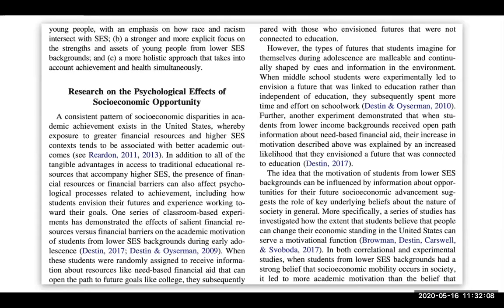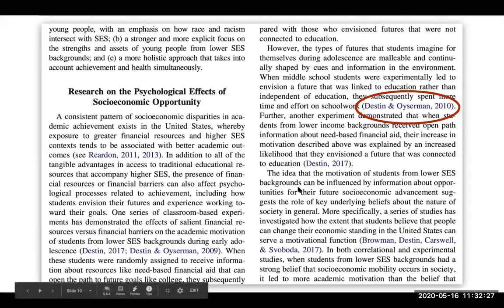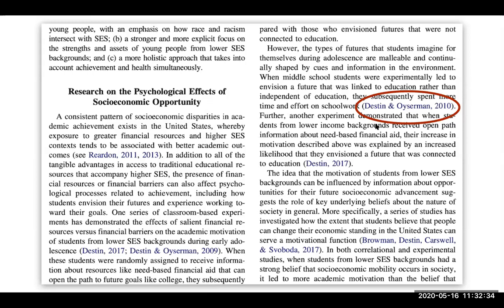Here's an example of part of a research article written in APA style. Let's take a look at some of the in-text citations. Here's one example that reads Destin and Oyserman, 2010. We are able to tell where the in-text citations are by looking for a formatting pattern of an author's last name, a comma, and a year, wrapped in parentheses. In this case, Destin and Oyserman are the authors, and 2010 is the year for this resource.